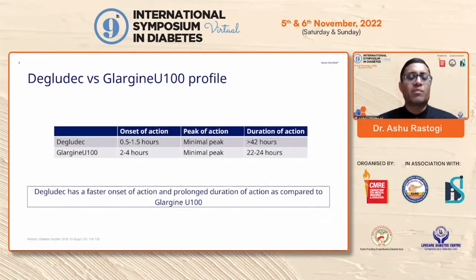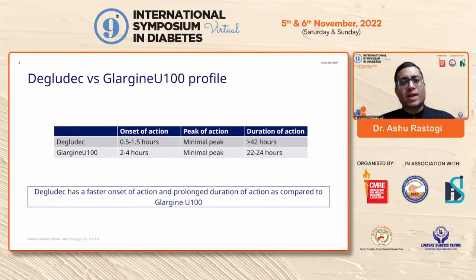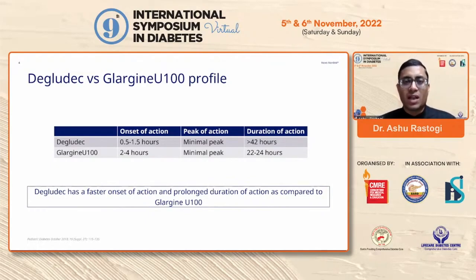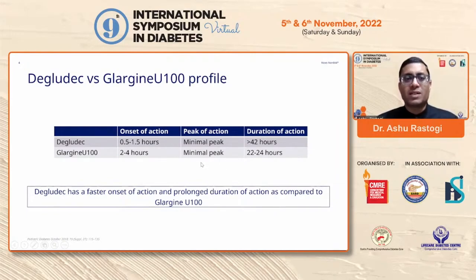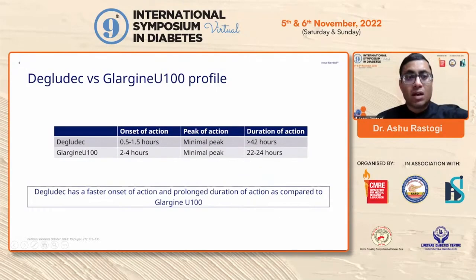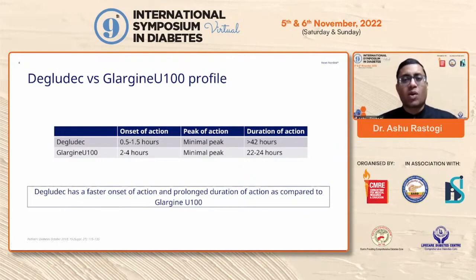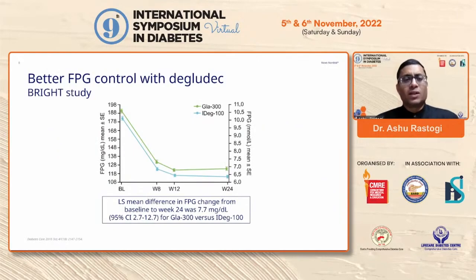Comparing degludec with the pre-existing standard basal insulin, glargine U100: the onset of action is almost half an hour to one hour earlier with degludec — around 0.5 to 1.5 hours — compared to 2 to 4 hours with glargine U100. Both are considered essentially peakless, but more importantly, degludec has a very long duration of action of more than 42 hours due to its di-hexamer and multi-hexamer chain formation, compared to 20 to 24 hours for glargine U100. So degludec has a faster onset and prolonged duration of action.